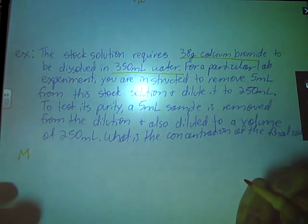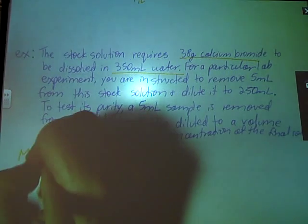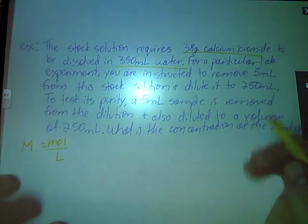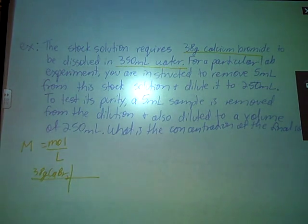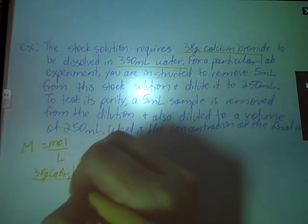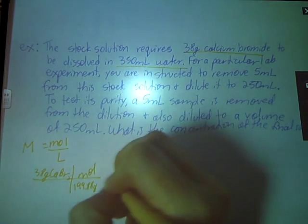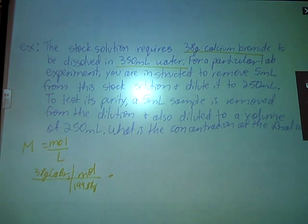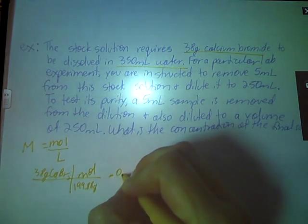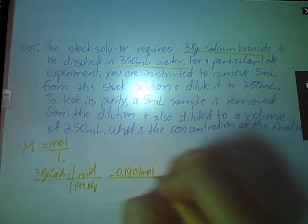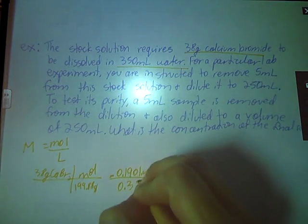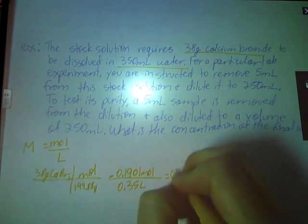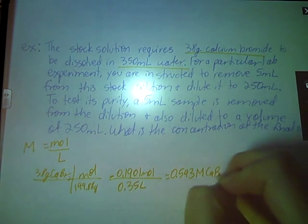So for this, we're going to need molarity, that's moles per liter. Well, I have neither at this juncture. I have grams and milliliters. So let's get to converting. 38 grams of calcium bromide. To get from grams to moles, I need their formula masses. Calcium has a formula mass of 40.08 plus two bromides at 79.90 each. Gives us a formula mass of 199.8 grams per mole. So 38 divided by that gives us 0.1901 moles of our calcium bromide divided by 350 milliliters. So that's 0.35 liters, 0.543 molar solution of calcium bromide. This is my stock solution. So this is the original one, but we're going to do some stuff to it.